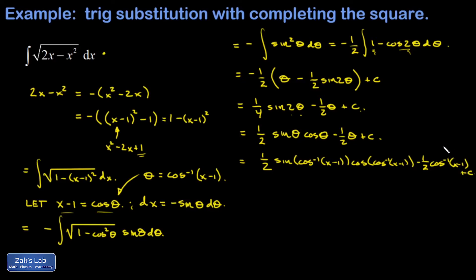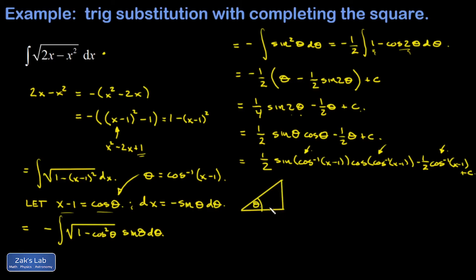Now I have one half times the sine of the angle whose cosine is x minus 1, times the cosine of the angle whose cosine is x minus 1, minus one half theta — which again is the angle whose cosine is x minus 1 — plus C. The inverse cosine of x minus 1 term is straightforward. The cosine of the angle whose cosine is x minus 1 simplifies easily because cosine and inverse cosine undo each other, giving x minus 1.